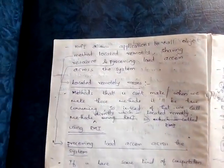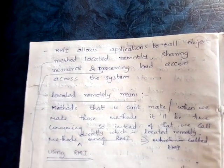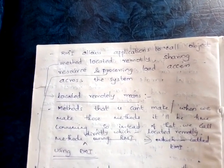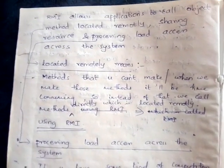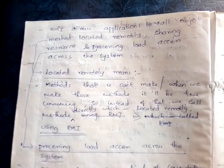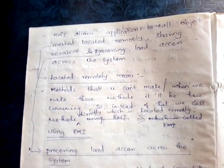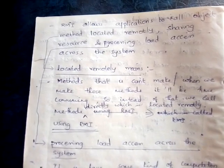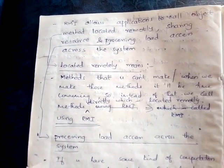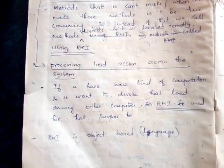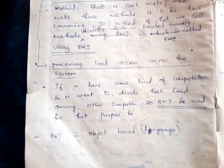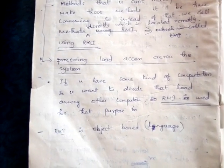The main real-world application of RMI is that it allows applications to call object methods located remotely, sharing resources and processing load across the system. Methods located remotely means those methods which would be time-consuming to recreate locally, so instead we call them directly using RMI. Additionally, if you have some computation and want to divide that load among other computers, RMI is used for that purpose too. RMI is an object-based language.